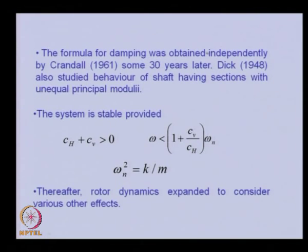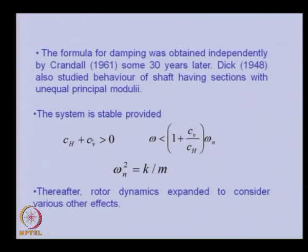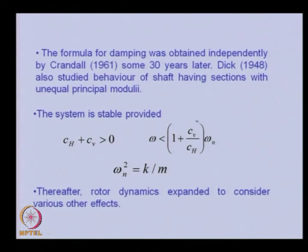The formula for damping was obtained independently by Crandall in 1961, some 30 years later. Dick in 1948 also studied the behavior of a shaft having sections with unequal principal stiffness. The stability condition involves both hysteretic (internal) damping and viscous (external) damping. This formula allows prediction of the whirling speed beyond which the system is unstable: if the speed is below this range, where omega_n is the natural frequency of the rotor system, the system will be stable; if it crosses this speed, there is a possibility of an unstable operating region.